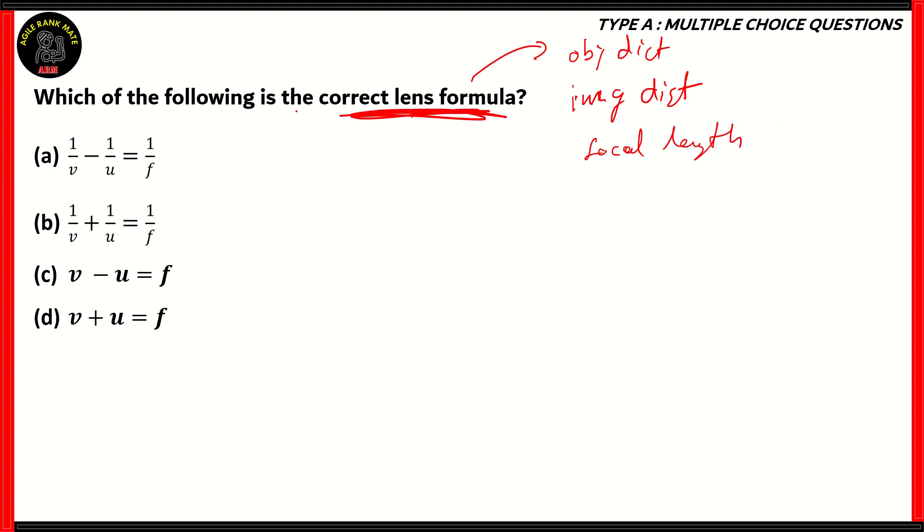So, therefore, lens formula is used for optic lens. So, we have four formulas here, all of them involving object distance, image distance, and the focal length. We need to find out which of these is the correct formula.